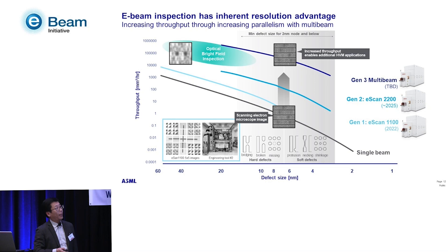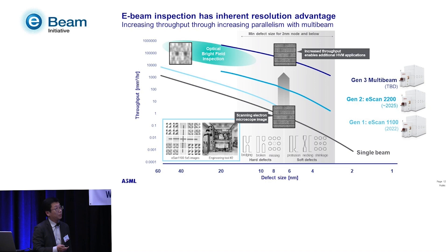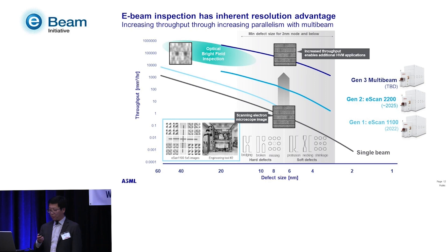We currently have our Gen 1 product — a 5×5 multi-beam tool — out in the field, going through customer application development. In 2025 we'll go to the second generation, offering about a 10x throughput improvement. And then there is our ultimate 'mother of all multi-beams,' which we hope will provide throughput comparable to optical bright-field inspection.